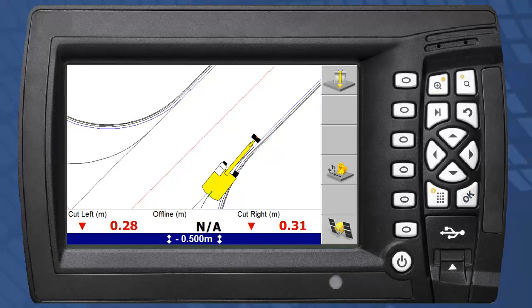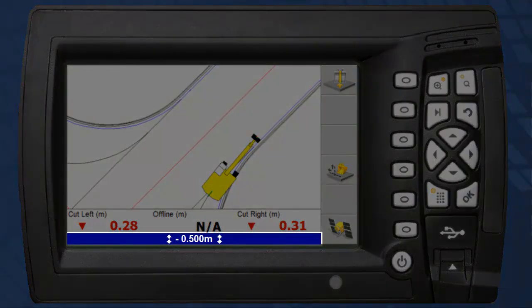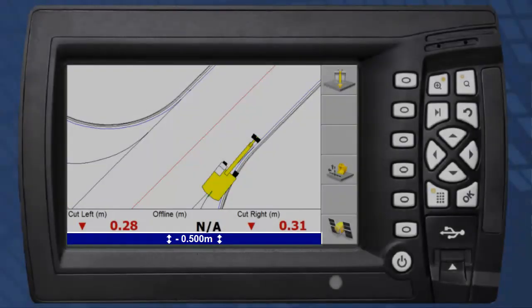It is not possible to see the vertical offset applied in the plan view. However, the offset bar, which is displayed in all views, provides details of any vertical offset that is applied.